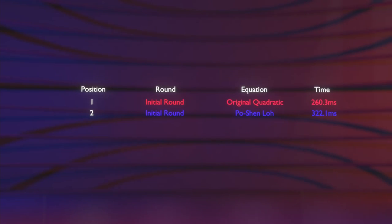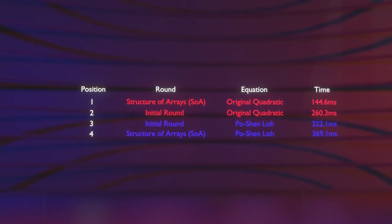Round two results: the original quadratic performed really well — 144.6 milliseconds versus 260.3 from round one. Interestingly, the Po Shen Lo formula actually performed worse with the structure of arrays, computing roots in 369.1 milliseconds versus its round one time of 322.1 milliseconds. So far the original quadratic formula is going strong.